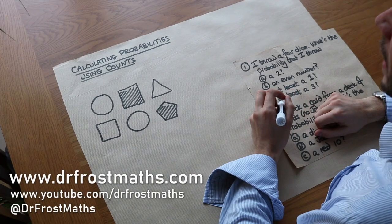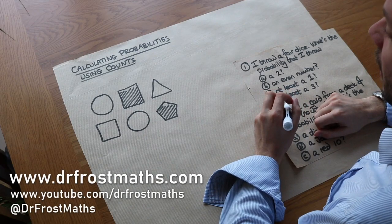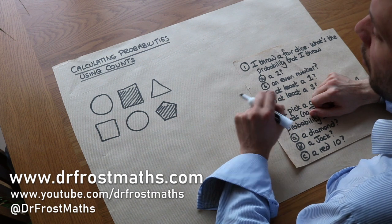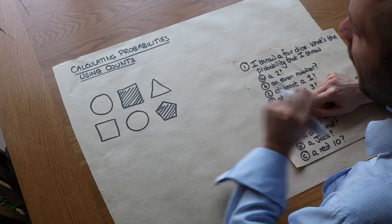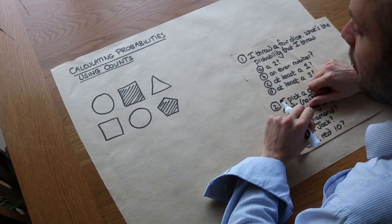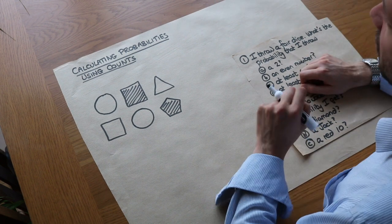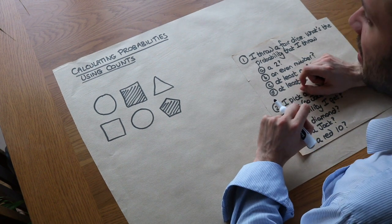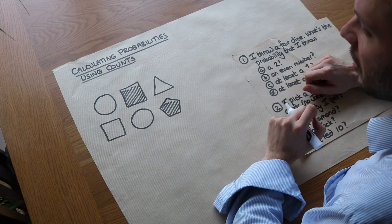Hello and welcome to this video on calculating probabilities using counts. We've previously seen probability to mean the proportion of time we expect to see something to happen. So for example, if a probability was say half, then it means we expect to see that thing happen half the time.